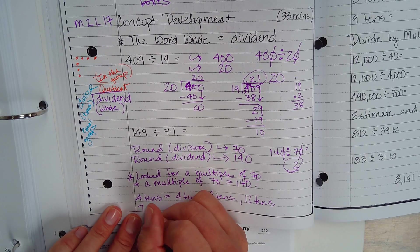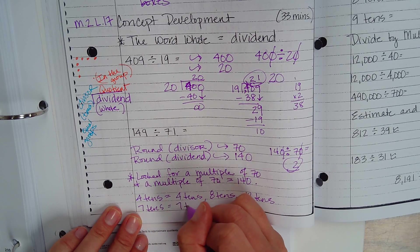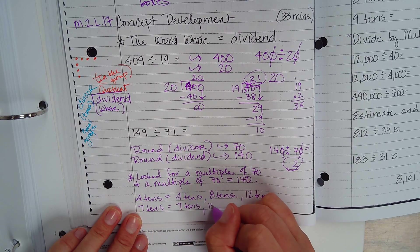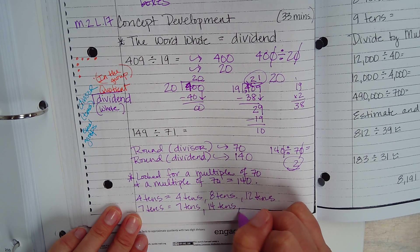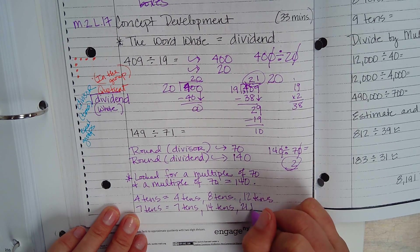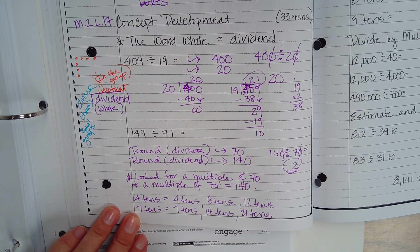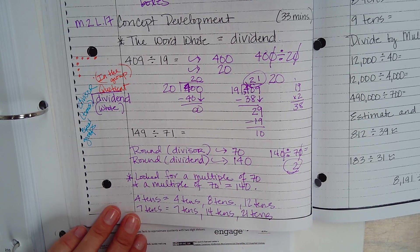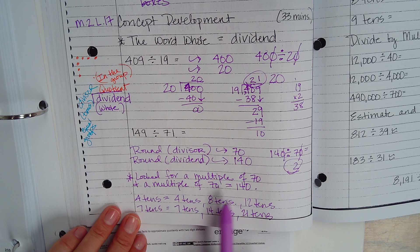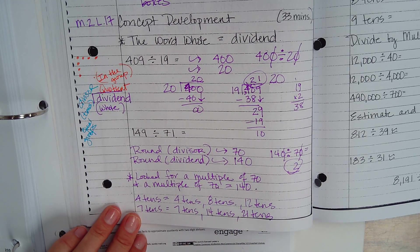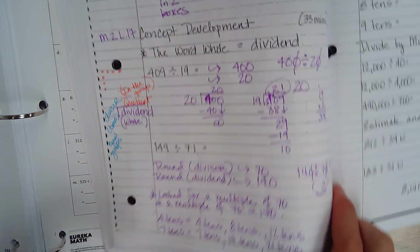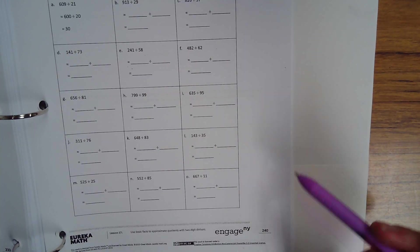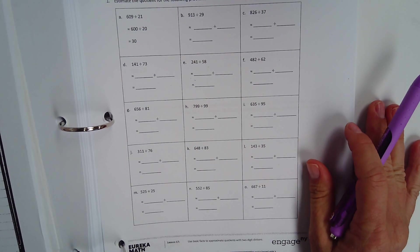We went seven 10s. We went seven 10s, 14 10s. Then it would be 21 10s, right? So I started looking for multiples and this is the strategy I used to try to find a number that's really easy to divide by. Okay. All right. So let's go ahead and go over the problem set before you start working on it.